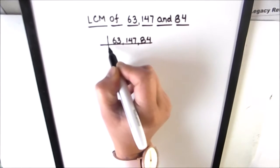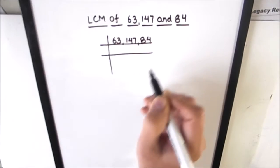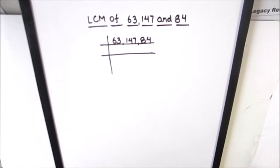In this method, we divide the numbers using prime numbers and find the prime factors of the number. After finding the prime factors, make the product of the prime factors to find the least common multiple of the three numbers.